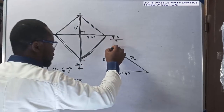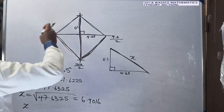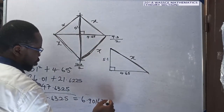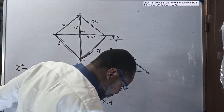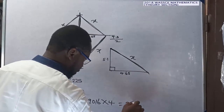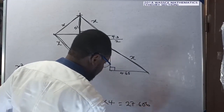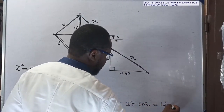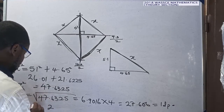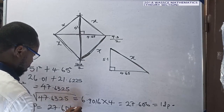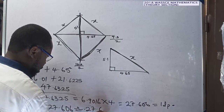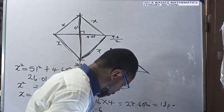To one decimal place, x is approximately 6.9. Since the rhombus has four equal sides, the perimeter equals 4 times x, giving 4 times 6.9016 equals 27.606. To one decimal place, the perimeter equals 27.6 cm.